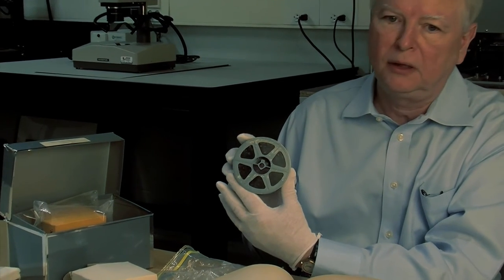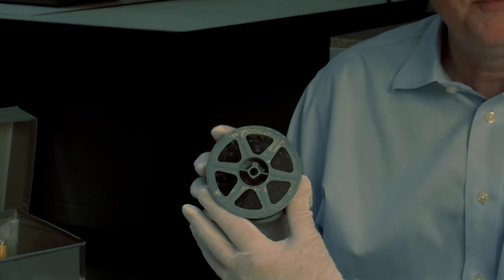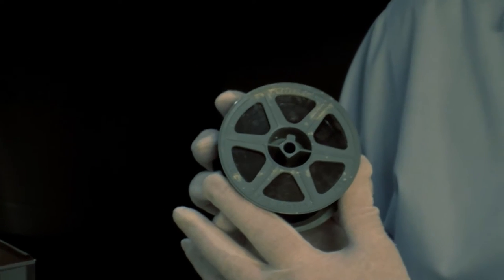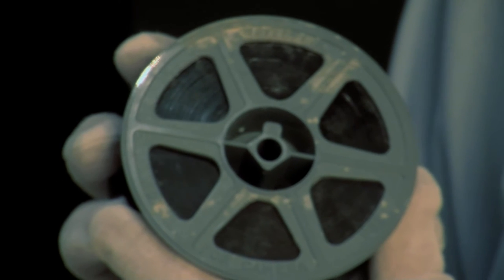This is an example of mold on microfilm. The mold is not progressing now because conditions have dried out from the conditions that initially fostered the mold growth.